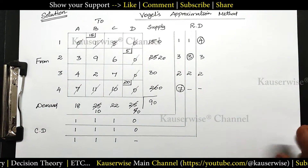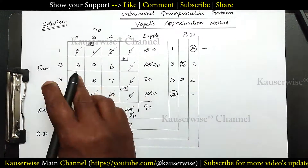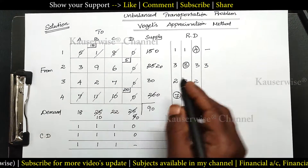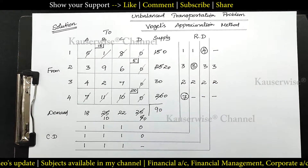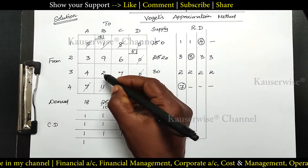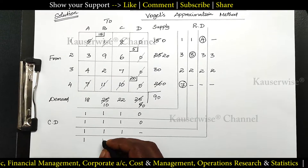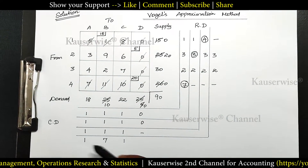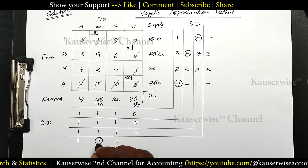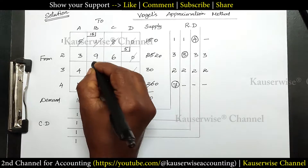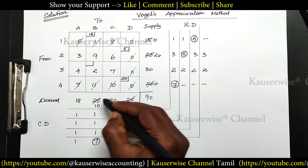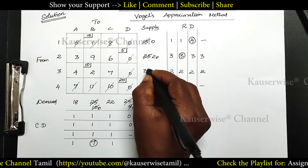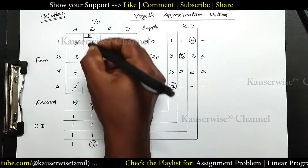Again find row difference and column difference. First row: 0. Second row: 3 and 6, difference 3. Next row: 2 and 4, difference 2. Last row: 0. Column difference: 3 and 4, difference 1; 2 and 9, difference 7; 6 and 7, difference 1. The highest penalty is 7. So I am going to select this particular column — least value is 2. Comparing demand 30 and supply 10: 10 is the least, so assign 10 here. It becomes 0 and here you get 20 balance. This particular column will get cancelled.